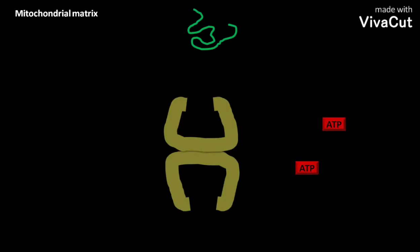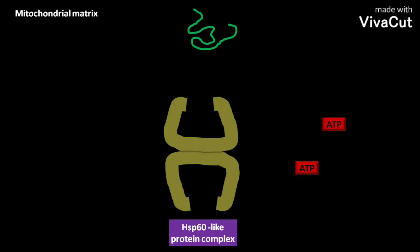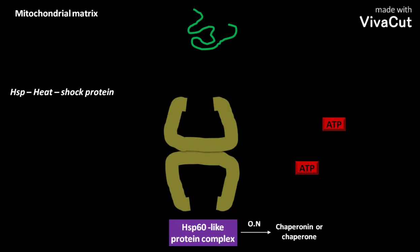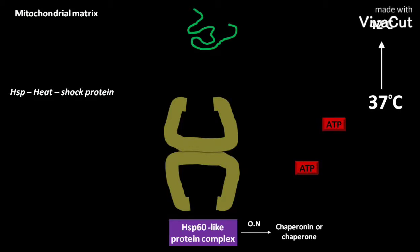The mitochondrial matrix of a eukaryotic cell contains an Hsp60-like protein complex, also known as chaperonin or chaperon. Hsp stands for heat shock protein. When a cell is exposed to an elevated temperature — for example, a cell living at 37°C exposed to 42°C — it synthesizes increased amounts of heat shock proteins. Besides Hsp60, mitochondria also contain Hsp70.